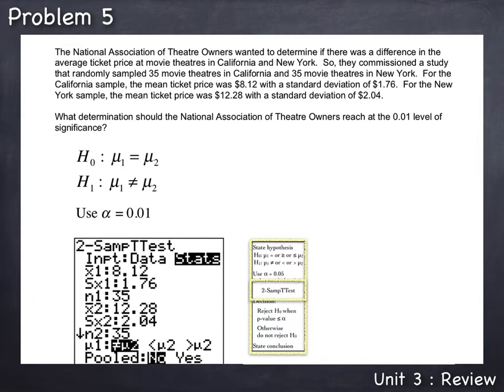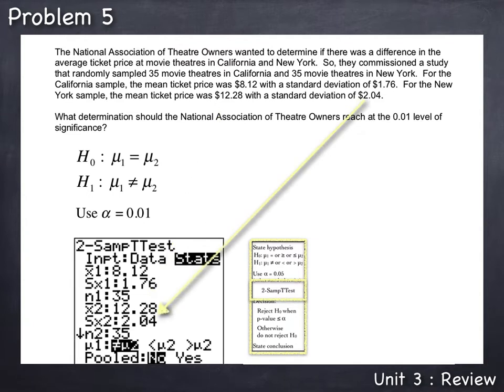In New York, X-bar 2, the mean ticket price, was $12.28, so we type in 12.28 and press ENTER. S-X-2, the standard deviation in New York, was $2.04, so we enter 2.04 and press ENTER. N-2, the sample size in New York, was 35 movie theaters, so we enter 35.